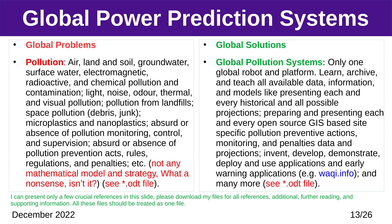Global Problem — Pollution: air, land and soil, groundwater, surface water, electromagnetic, radioactive, and chemical pollution and contamination; light, noise, odor, thermal, and visual pollution; pollution from landfills; space pollution; microplastics and nanoplastics; absurd or absence of pollution monitoring, control, and supervision; absurd or absence of pollution prevention acts, rules, regulations, and penalties, etc. Global Solution — Global Pollution Systems: learn, archive, and teach all available data, information, and models; prepare open-source GIS-based site-specific pollution preventive actions, monitoring, and penalties data; invent, develop, demonstrate, deploy, and use applications and early warning applications, and many more.